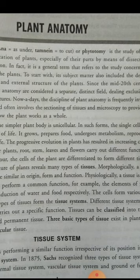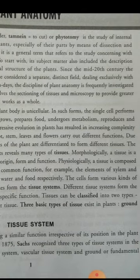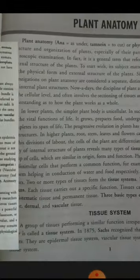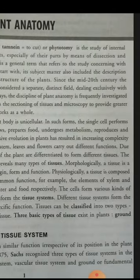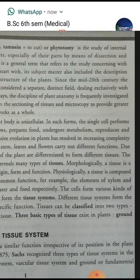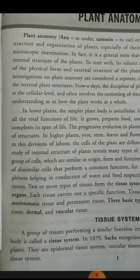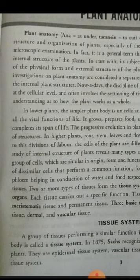We have to study the various types of tissue systems present in root systems, shoot systems, and leaves. Basically there are three basic types of tissue systems: ground tissue, meristematic tissue, and permanent tissue. From lower classes, we know three basic tissue types exist in plants — ground, dermal, and vascular tissue systems. When we draw any internal structure like a stem or root, we draw all the types of cells present.